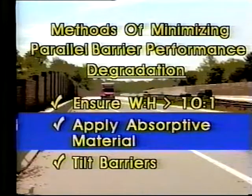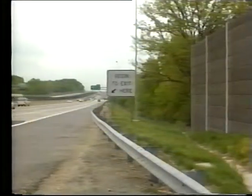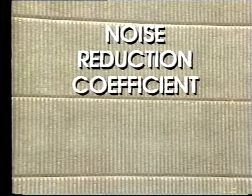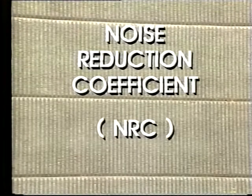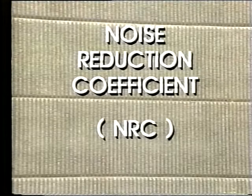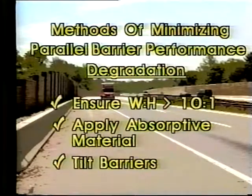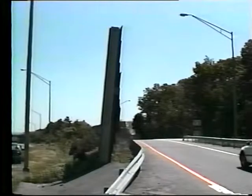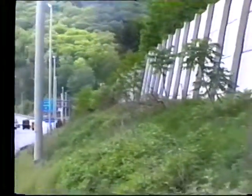Applying acoustically absorptive material on either one or both barrier facades is another solution. The amount of noise that a barrier absorbs is typically expressed in terms of a noise reduction coefficient, or NRC. The NRC can range from 0 to 1: 0 means the barrier will reflect all the sound that strikes it, and 1 means the barrier will absorb all the sound. A typical NRC for an absorptive barrier ranges from 0.6 to 0.9. Finally, tilting one of the barriers outward away from the road is another option, though this must consider structures higher than the opposite barrier, which may be adversely affected by the reflected sound.